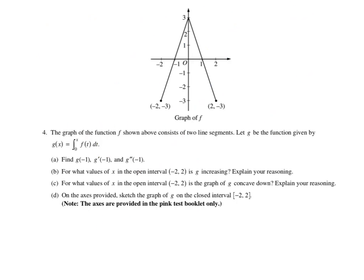All right, saddle up, here we go. We are looking at a 2002 question off the AB exam, but it's just as likely to show up on the BC exam — it's very typical. Look at this: they gave you a picture of f, but then they defined g. g is the accumulation function, not f. g is the accumulation, and we've got an integral from 0 to x of f. Just glance over all four parts right now.